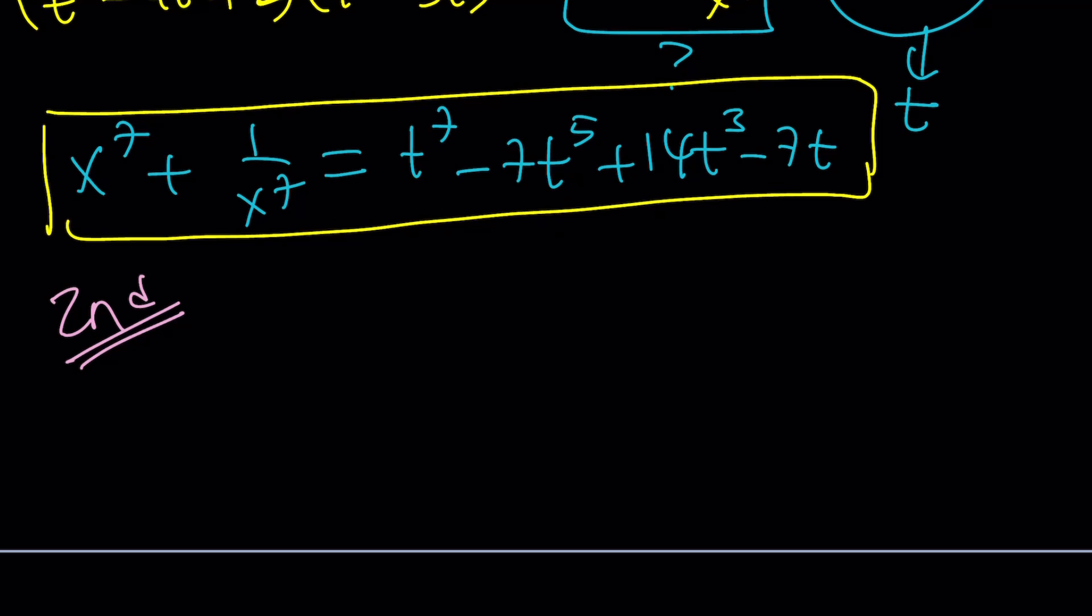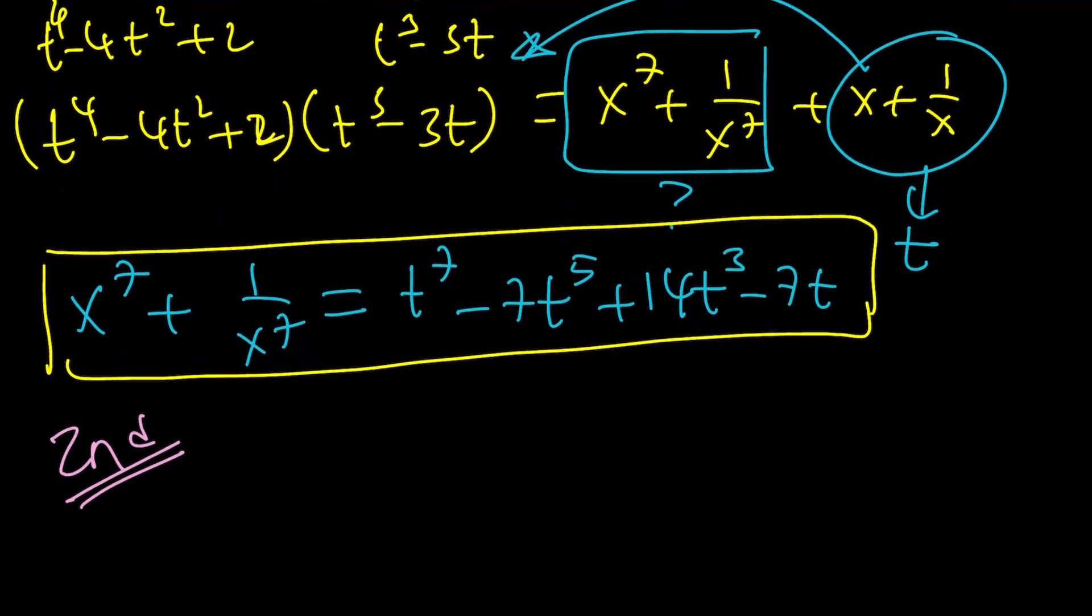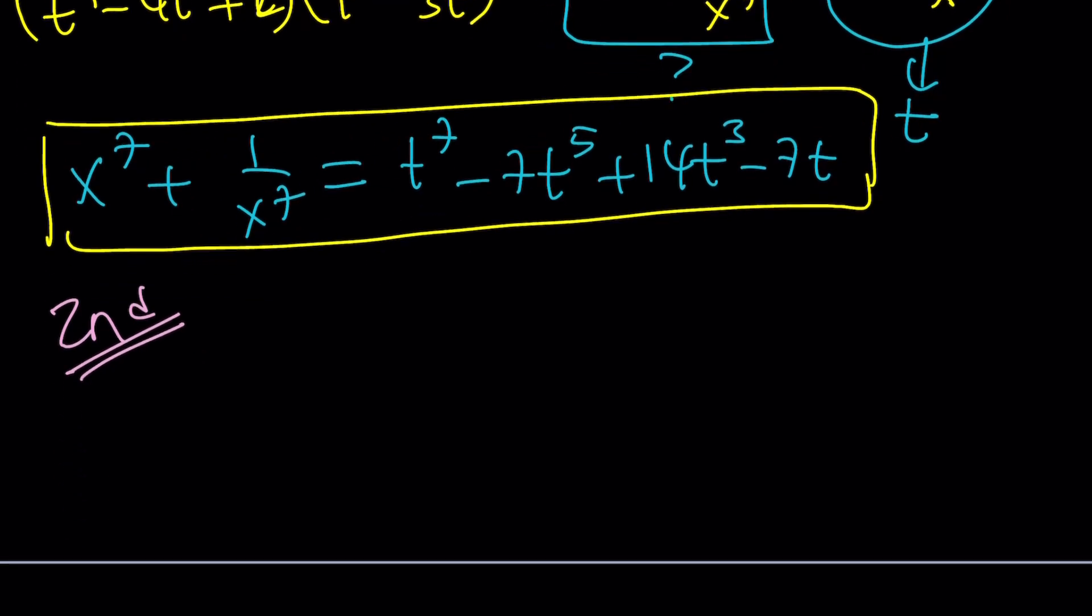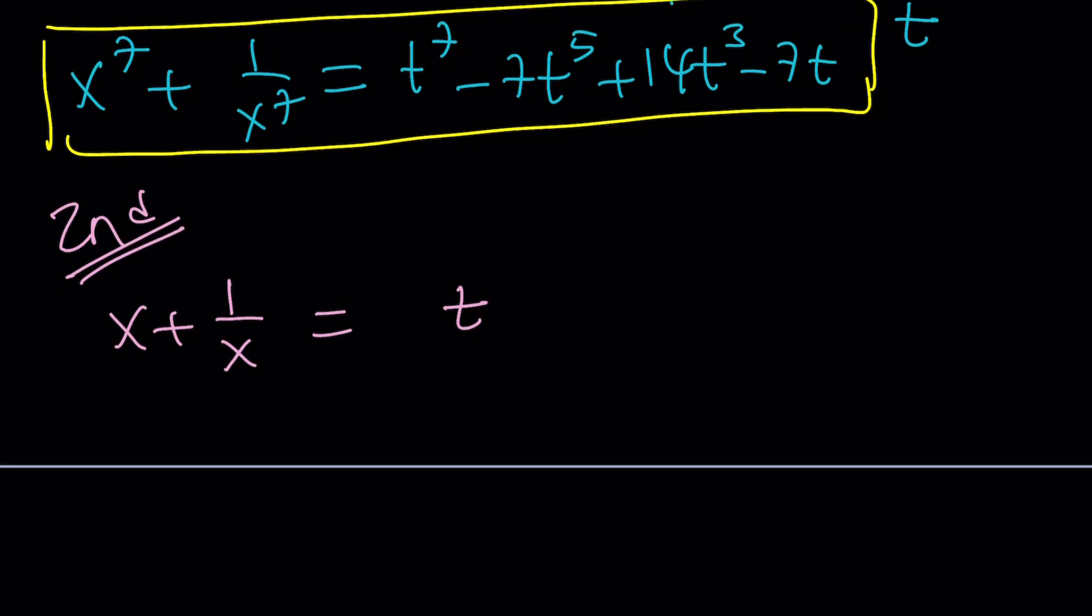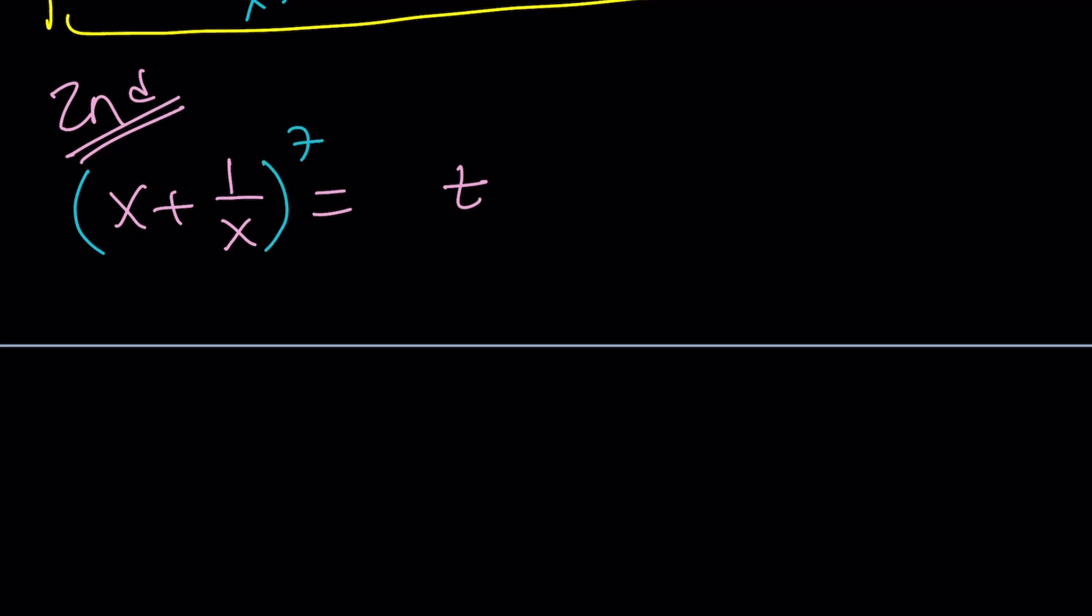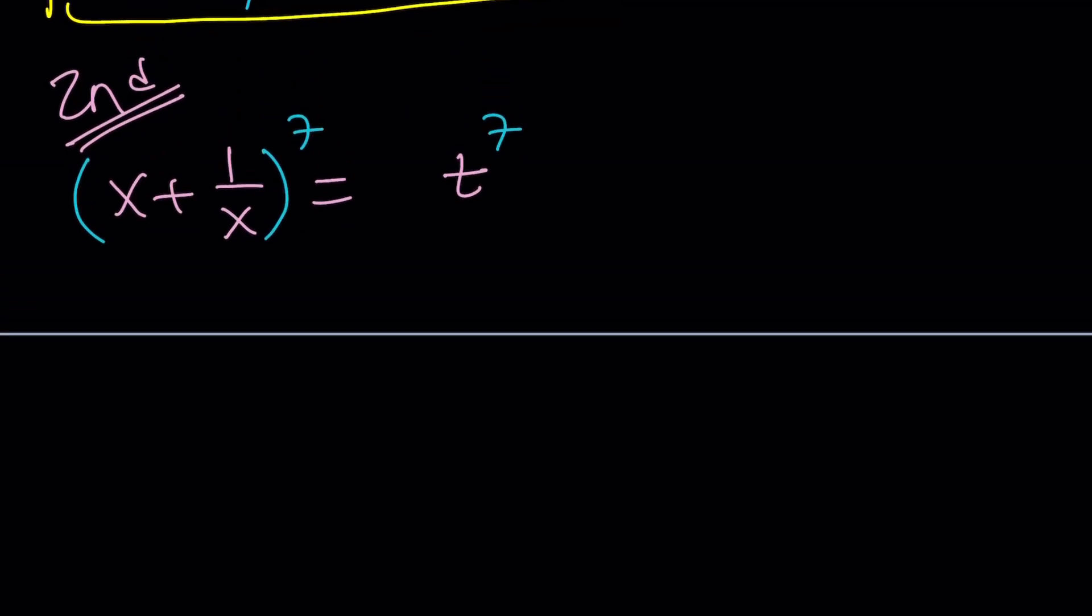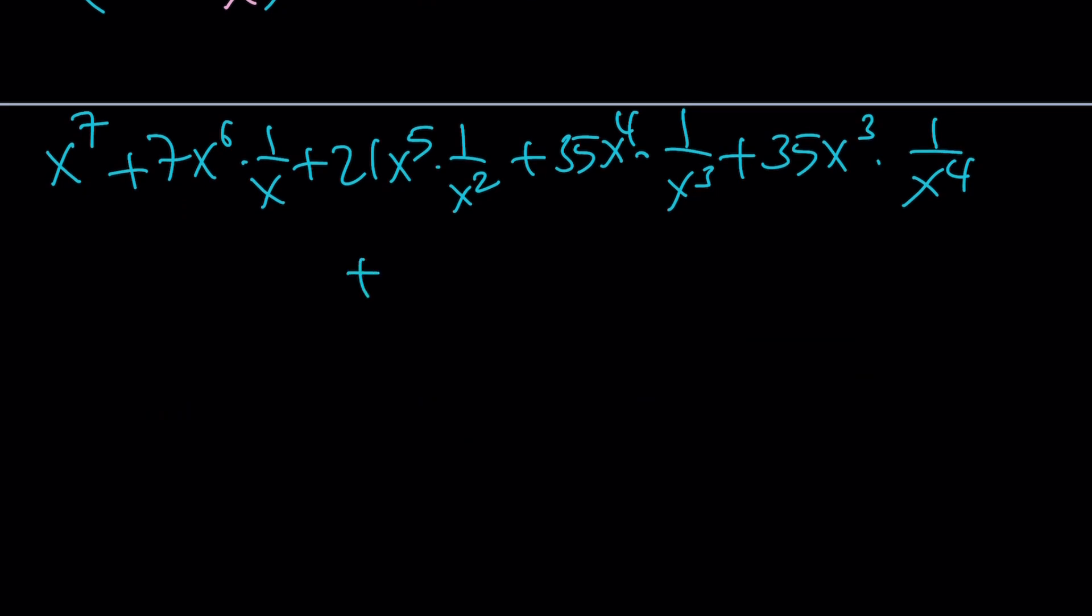For my second method, I want to do something different. The third method is already out of the way, hopefully. If you haven't checked it, please go ahead and check it out. I talked about it right after the first method. But the second method should be something different. This is equal to t. I'm going to use t again because I like t both ways. I'm going to raise both sides to the seventh power and use the binomial theorem. Good old binomial theorem. There's a reason why we have that.